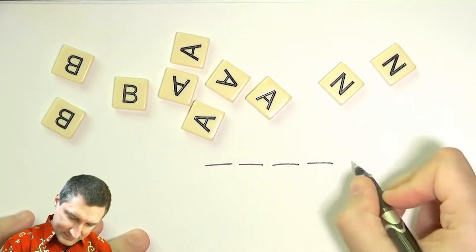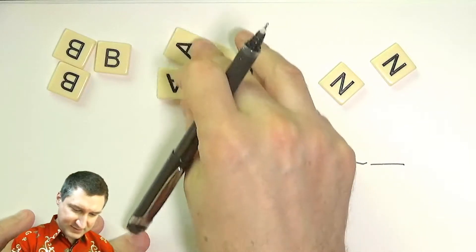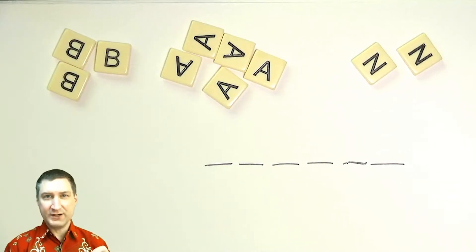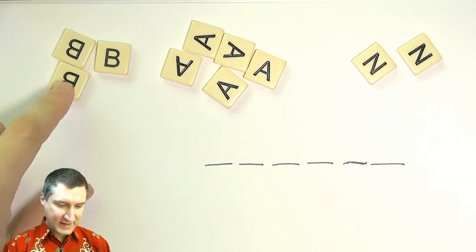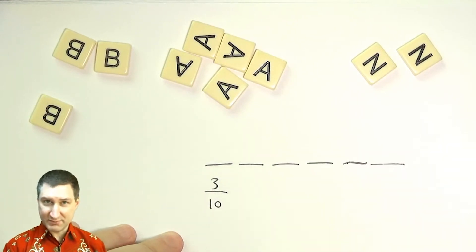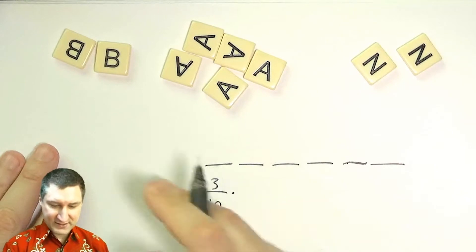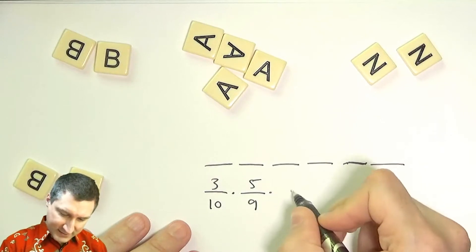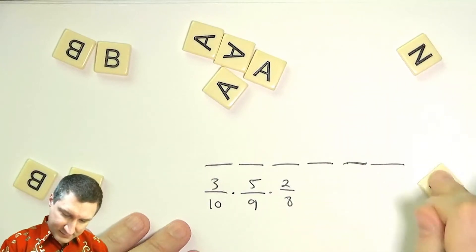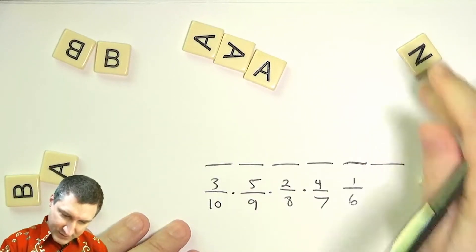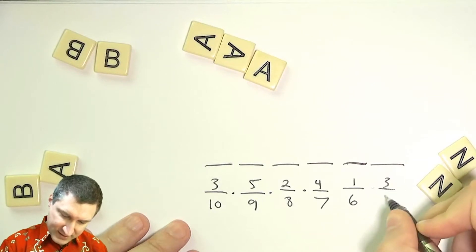We've got six slots, and the bag has three B's, five A's, and two N's. The probability for each individual draw is the number of good outcomes over total outcomes. On the first draw I have three B's out of ten, so that's 3/10. Then nine tiles remain and five are A's. Then I need an N: two out of eight. Then another A: four out of seven. Then the other N: one out of six. Then another A: three out of five.